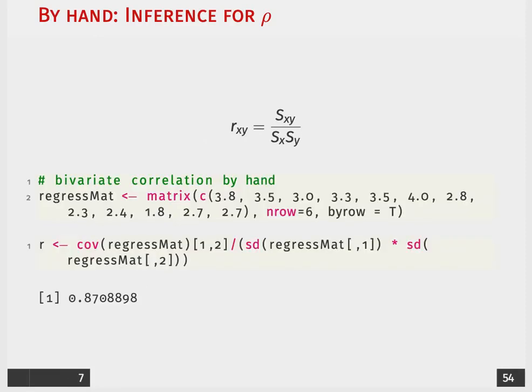So we're going to do this by hand in R. I've first set up our matrix such that x is one variable, the first column, and the second one will be y. We'll then take the covariance between x and y divided by the standard deviation of x, that first column, times the standard deviation of y, the second column, and we get r, again lowercase r, as 0.87.